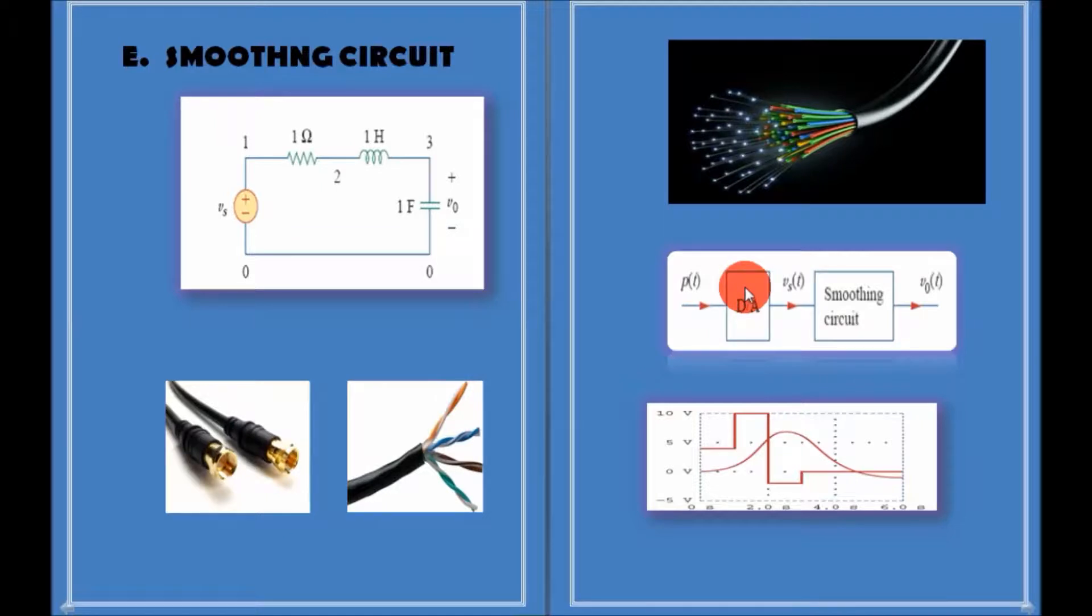At the receiving end, the signal is applied to a digital to analog converter whose output is a staircase function. In order to recover the transmitted analog signal, the output is smoothed by letting it pass through a smoothing circuit.